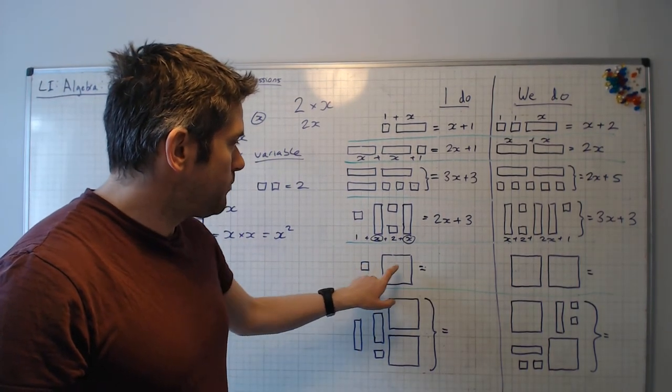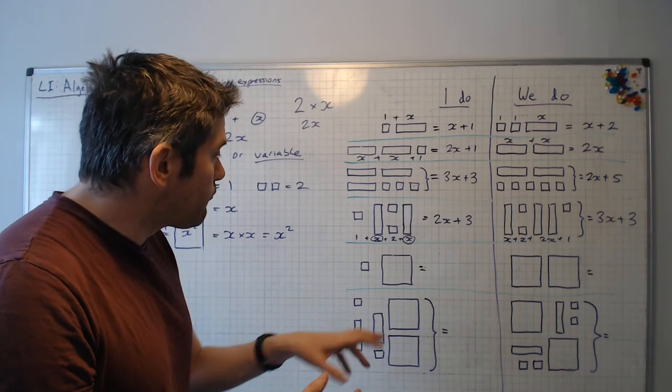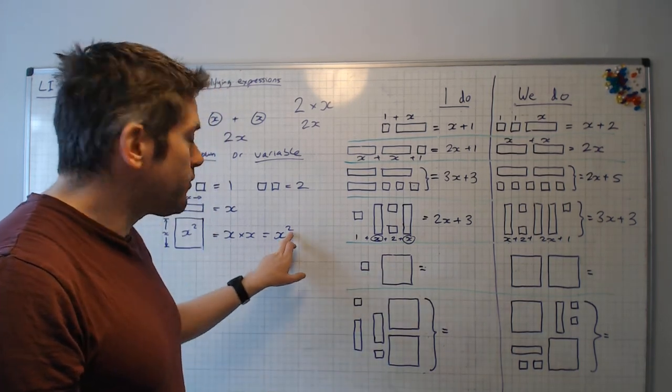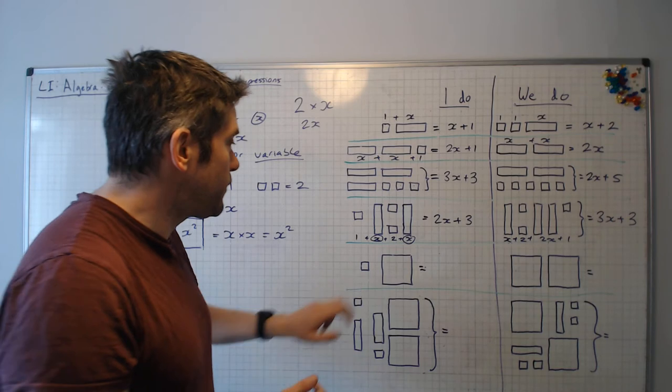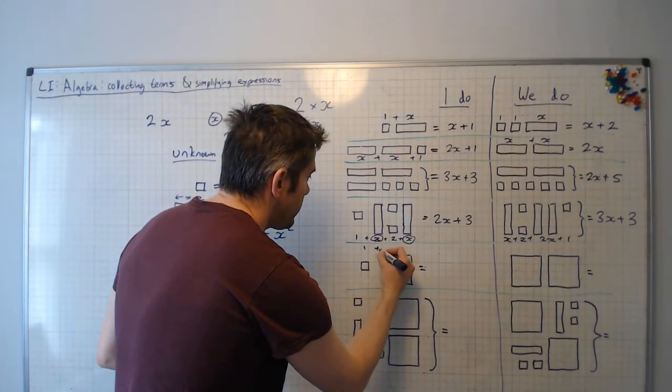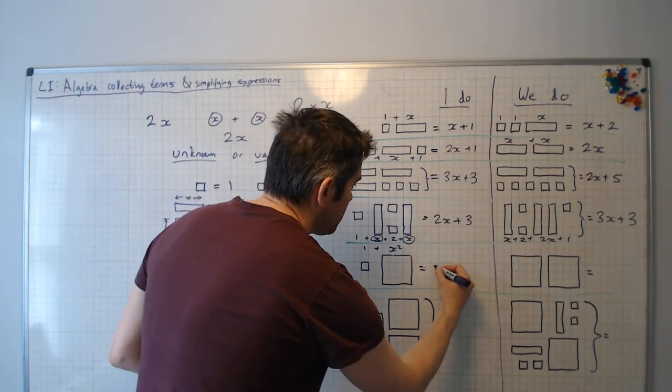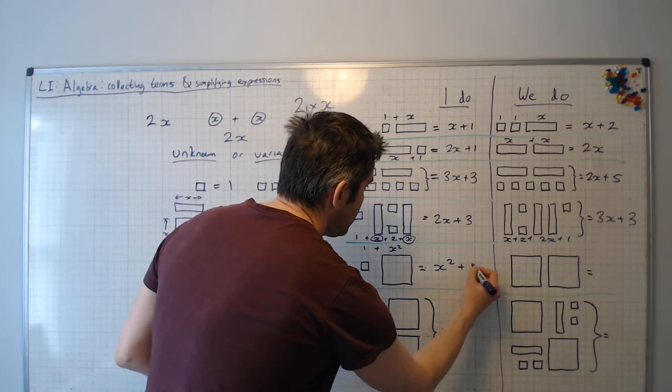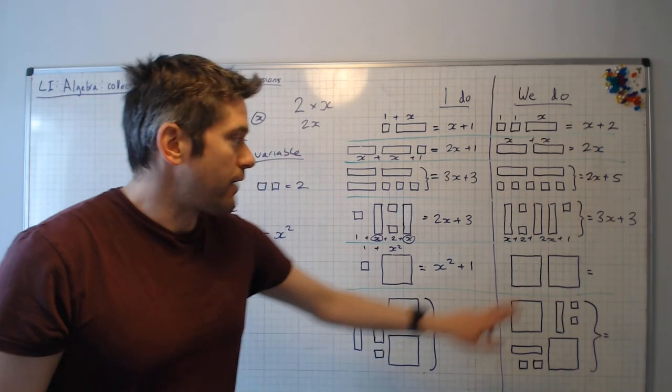So we have 1 plus x squared. Again, we write the largest power of x first. So we write this one before this one. But we have 1 plus x squared. We would write x squared plus 1. Have a go at this one.